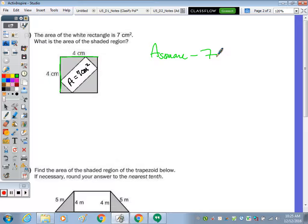So the area of the square is 4 squared. And 4 squared is 16. So 16 minus 7 is 9, including the unit of centimeters squared.